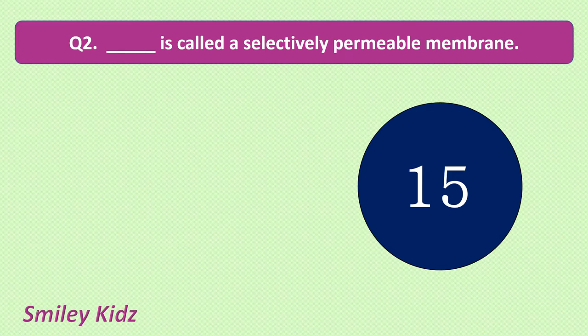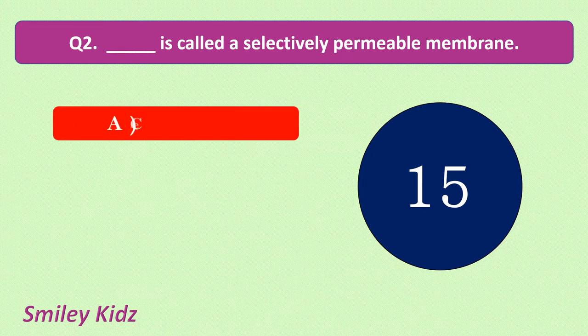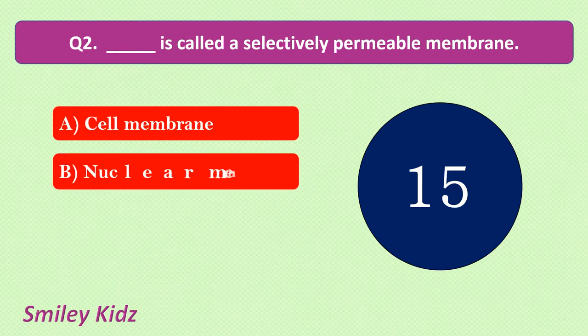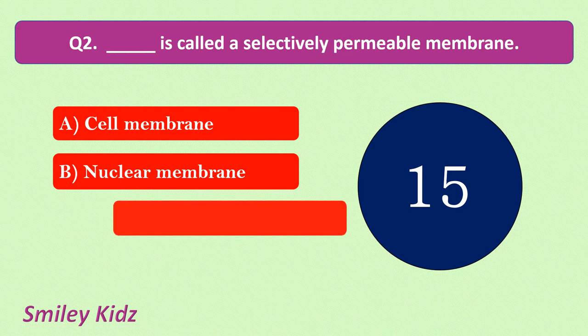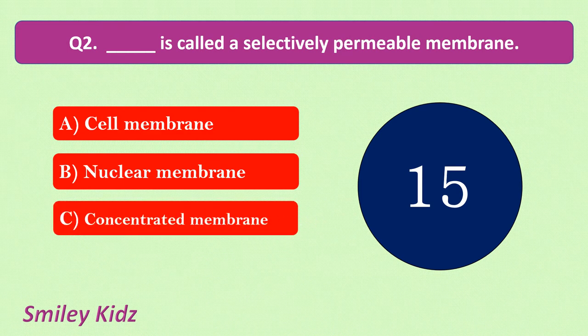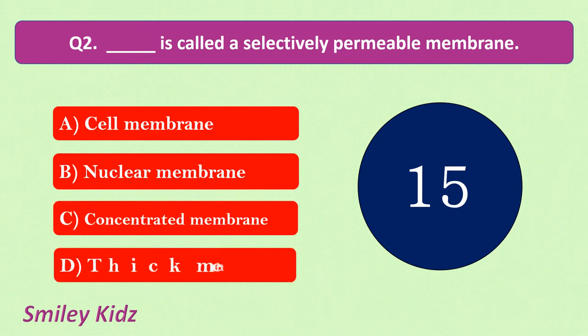Question number 2. Dash is called a selectively permeable membrane. Your options are: cell membrane, nuclear membrane, concentrated membrane, thick membrane. Your time starts now.